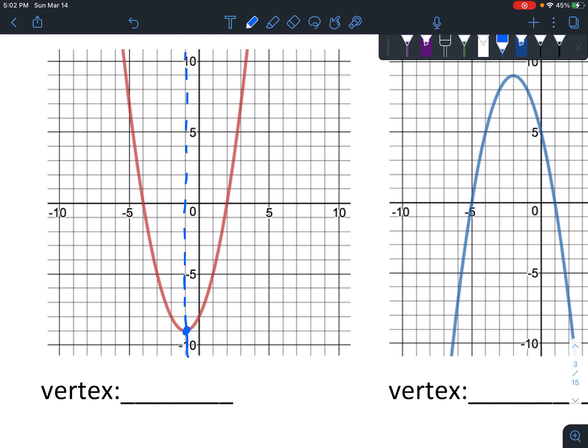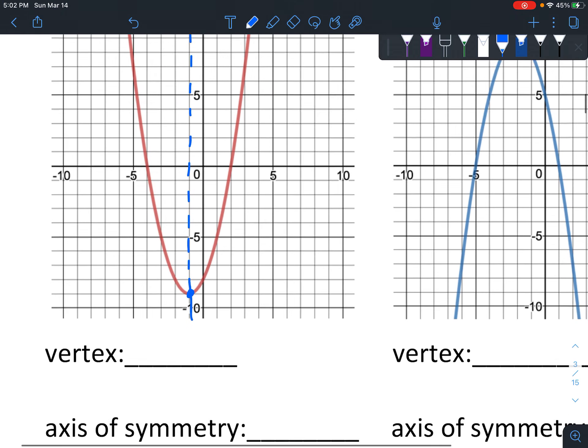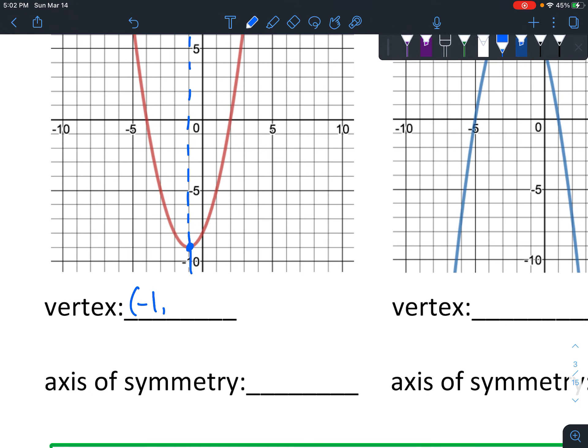And then put a little dot down there, and so that's where that dot is - that is the vertex. And find the coordinates: start at zero zero, see how far you go left. So you go one left and then you go down nine, so it's negative one, negative nine.